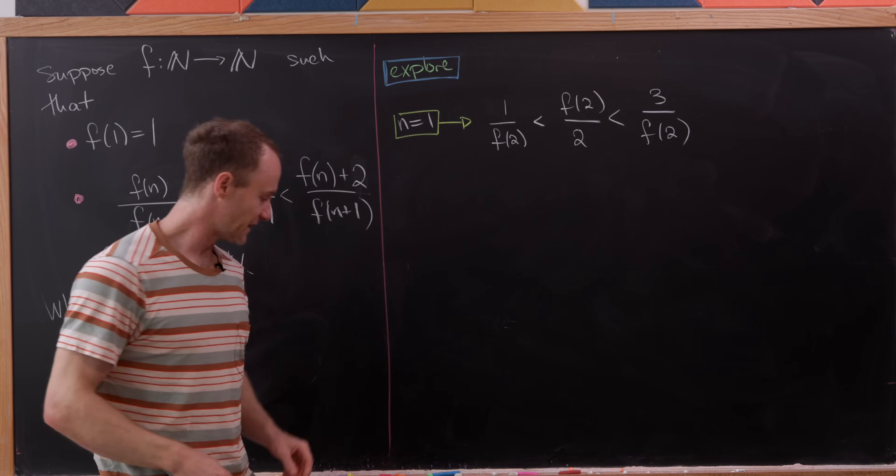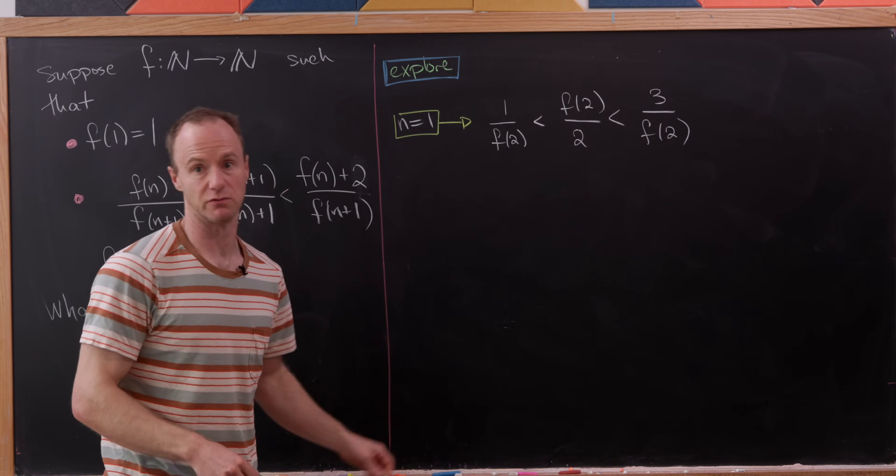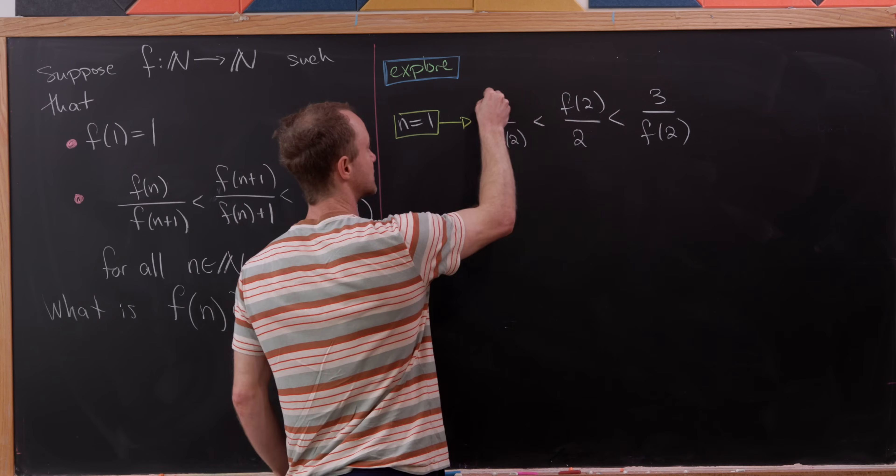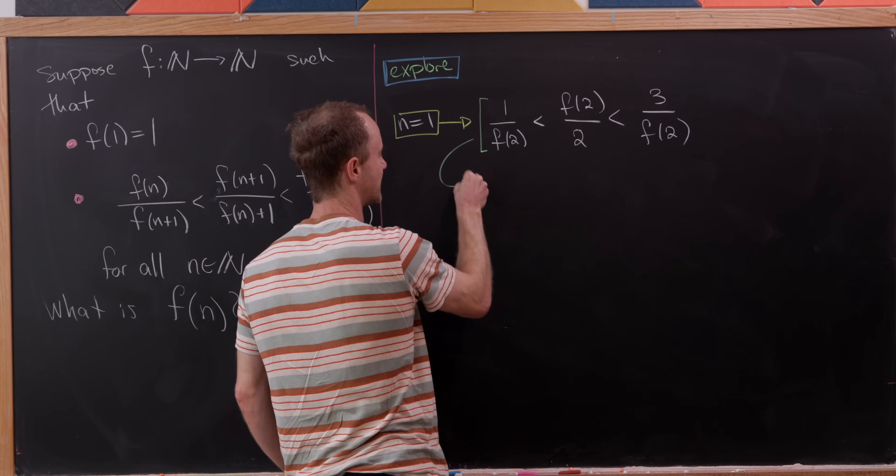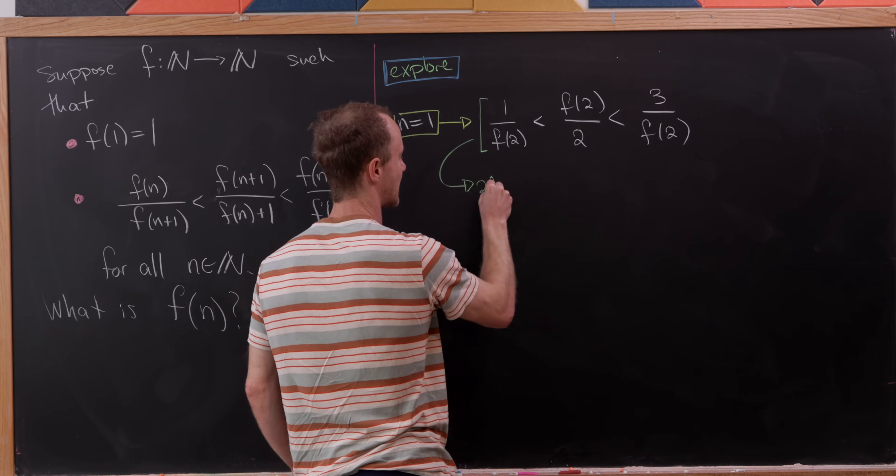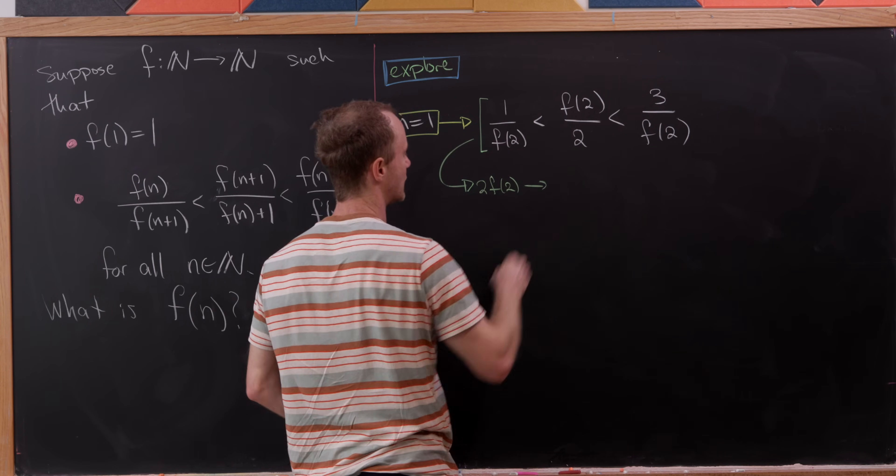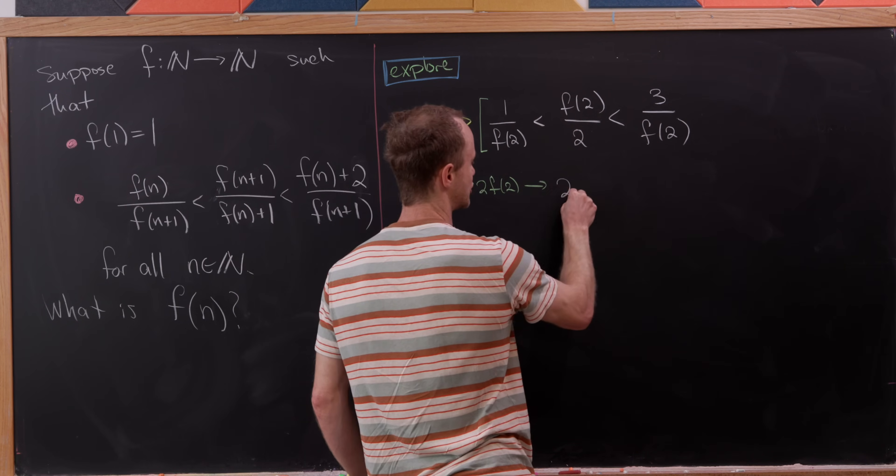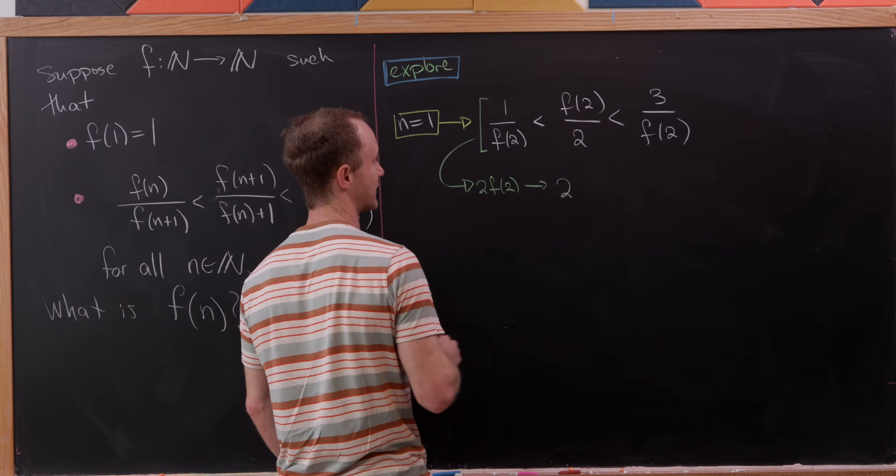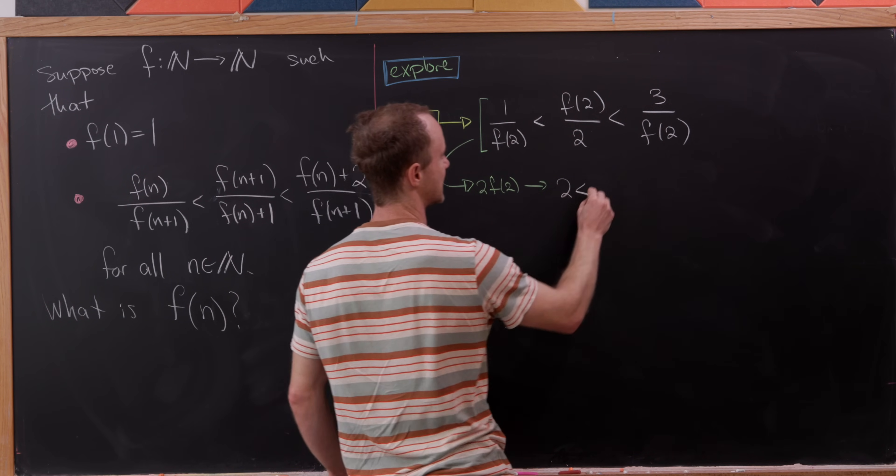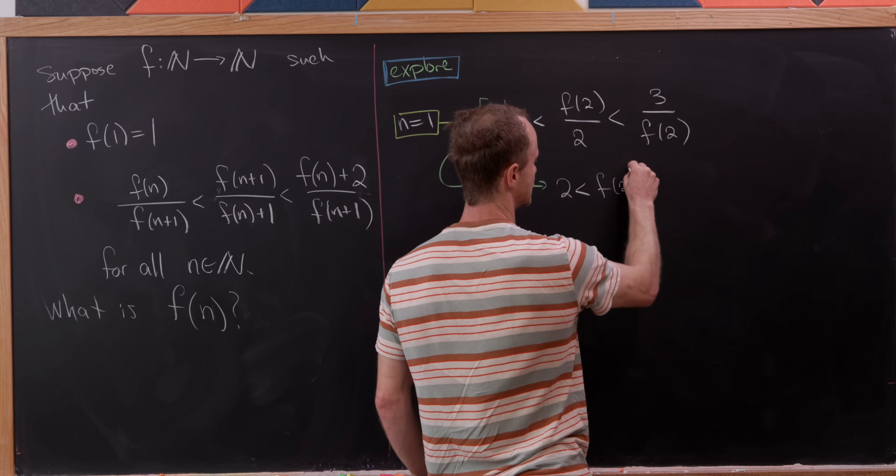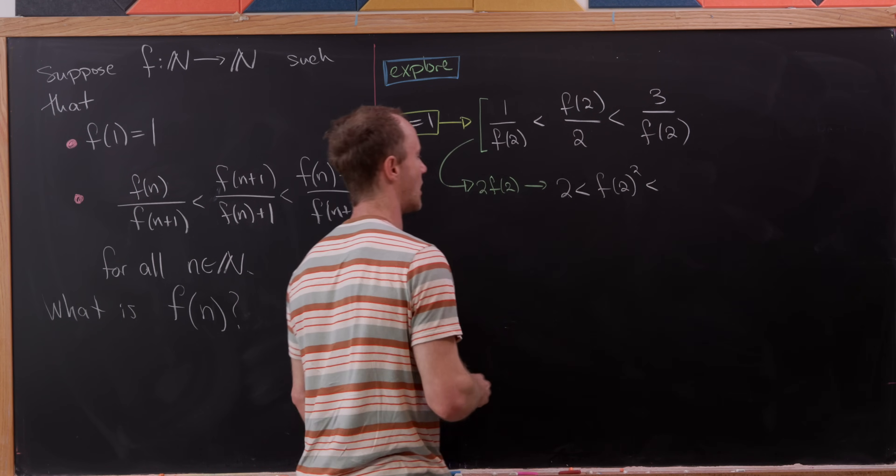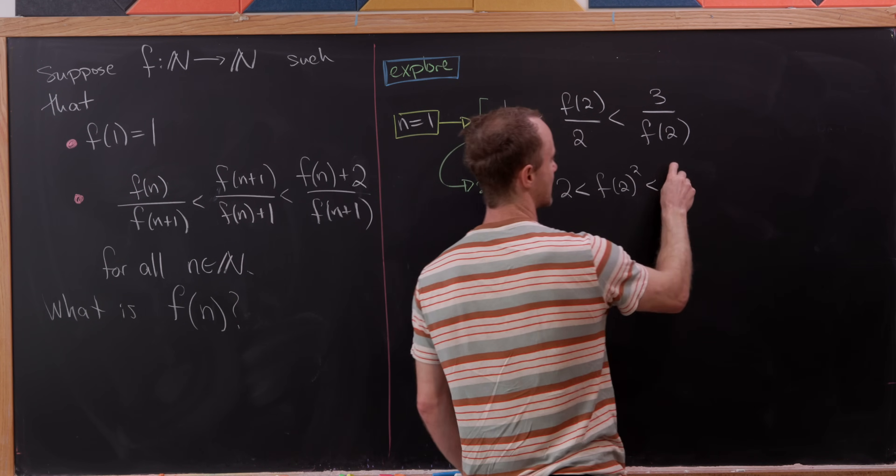So we've got something like that, but that's just begging us to clear the denominators. So if we multiply this entire thing by two times f of two, we're going to have a two on this left part, then in the middle we're going to have f of two squared, and then on that right part we're going to have the number six.